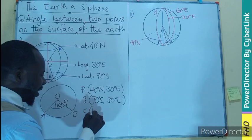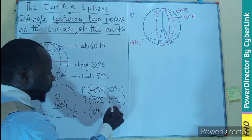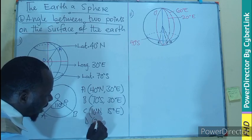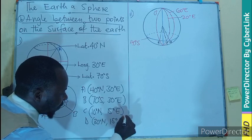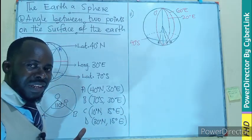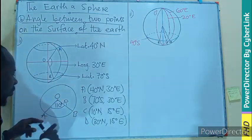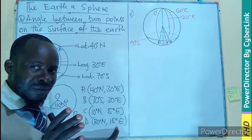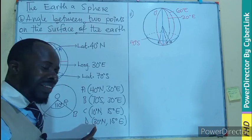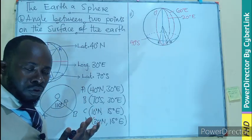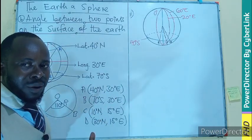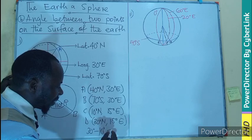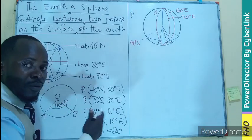For example, take point C at 10 degrees north, 15 degrees east, and point D at 30 degrees north, 15 degrees east. They have the same longitude, so we discard that and focus on the latitude. Both are north, so they are on the same side — we perform subtraction. The angle is 30 degrees minus 10 degrees, which gives us 20 degrees.